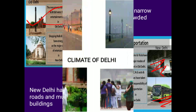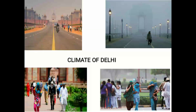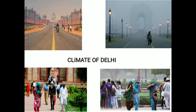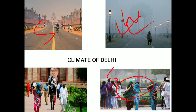Regarding the climate and attractions of Delhi: it is very hot in summer and very cold in winter. The languages spoken are basically Hindi, Punjabi, and English, but the official languages are English and Hindi.